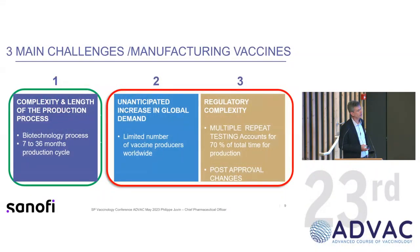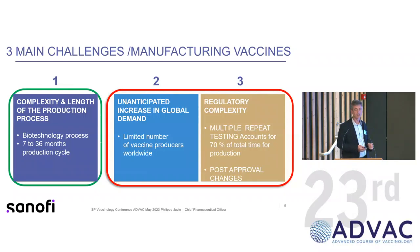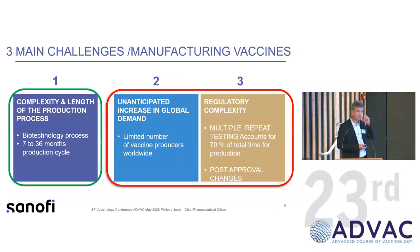To summarize the first part: one of three challenges is the complexity and duration of the process — already explained. The second is demand that is difficult to anticipate. Facing this variable and not-always-predictable demand — and underlining the need to anticipate — we still have only a limited number of vaccine producers complying with international regulations. The third challenge is regulatory complexity.